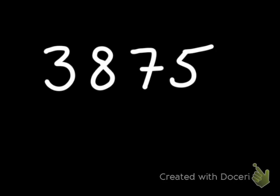What is the divisibility rule for the number 5? Like 2, it is one of the easiest rules to remember. You just have to ask yourself, does the number end in either a 0 or a 5? If it does, then that entire number will be divisible by 5. Look at this number: 3875. Does it end in a 5 or a 0? Yes, it does. So 3875 is divisible by 5.